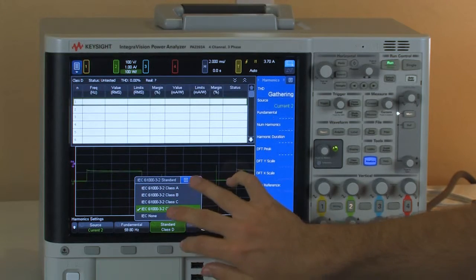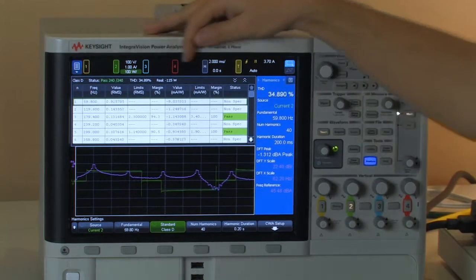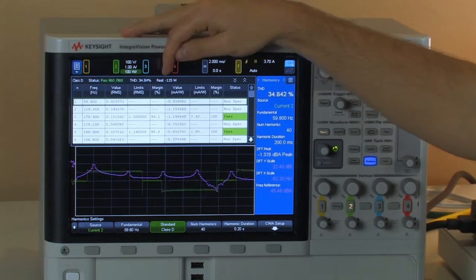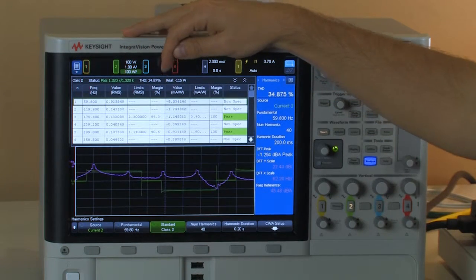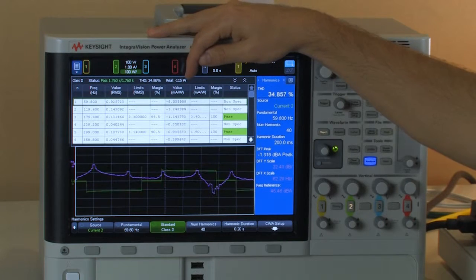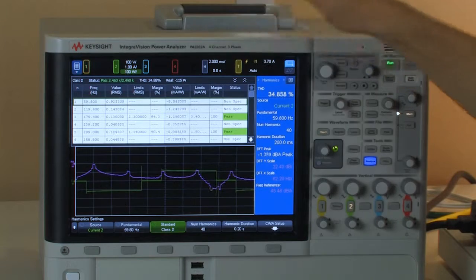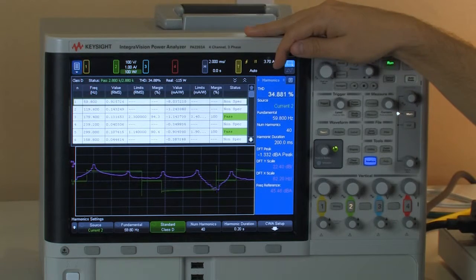Going on to class D, you get the most amount of columns here. You get not only the same RMS limits and margin from the other tests, but then you have a milliamps per watt value, a milliamps per watt limit, a margin, and the total status of failing or passing.